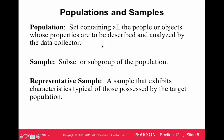In statistics, we first determine what the population is. It's the set containing all people or objects whose properties are to be described and analyzed by the data collector. The population is the group or things we're trying to study — sometimes it's people in social science, sometimes it's objects like cars or cells in a petri dish. That's the group we're trying to learn about.